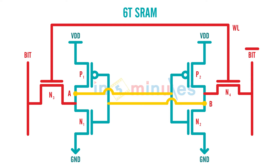We'll quickly understand the read and write operation in a six transistor SRAM circuit. Let's start with a read operation. First and foremost, when we want to start doing a read, we need to assume something that is already being written previously at node A and node B.